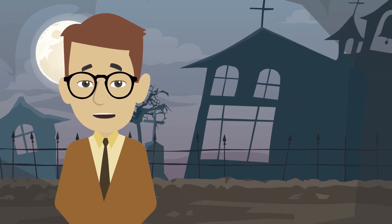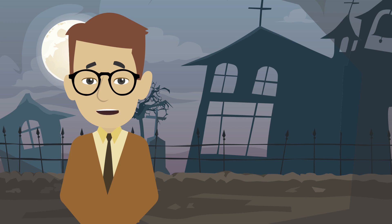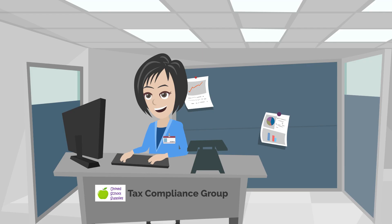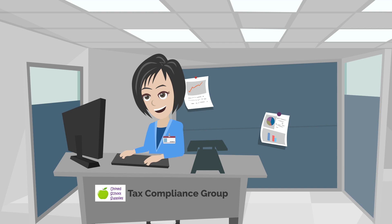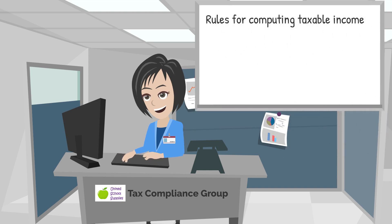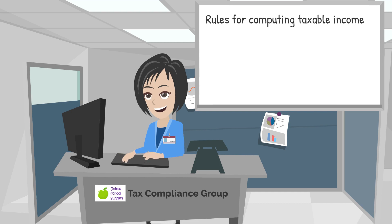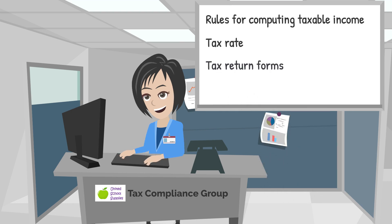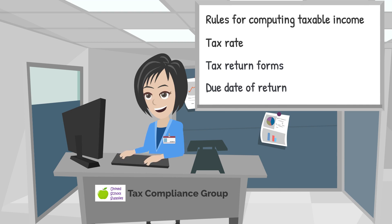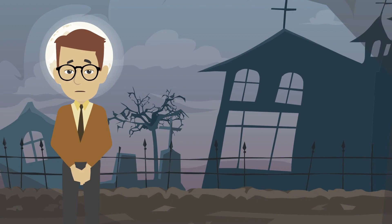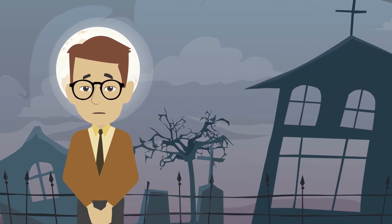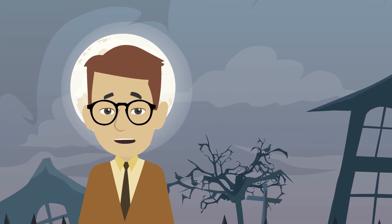Along the same lines, the structure of your business matters a great deal when it comes time to prepare the tax return. The business's structure determines the specific provisions of the tax code that apply in computing the business's taxable income for the year, the tax rate at which the company's income is taxed, the IRS tax form that must be prepared, the date on which the final tax return must be filed with the IRS, and a lot of other things affecting how you compute your taxes and file this year's tax return.